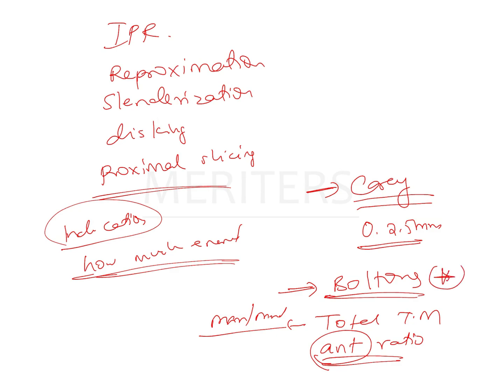The Bolton's analysis is a very important analysis to identify correctly and accurately the areas which have a tooth material excess or deficiency. It helps us to gauge which areas need to be slenderized.